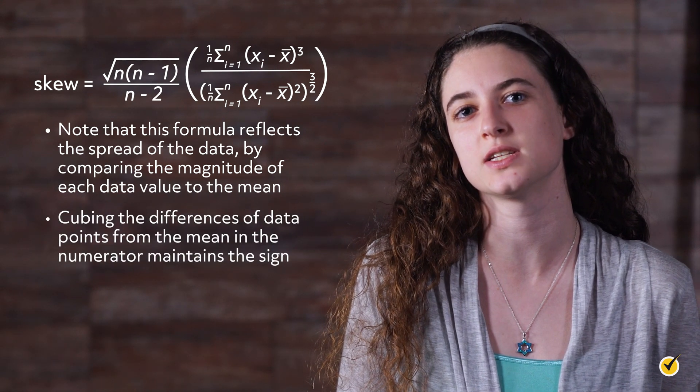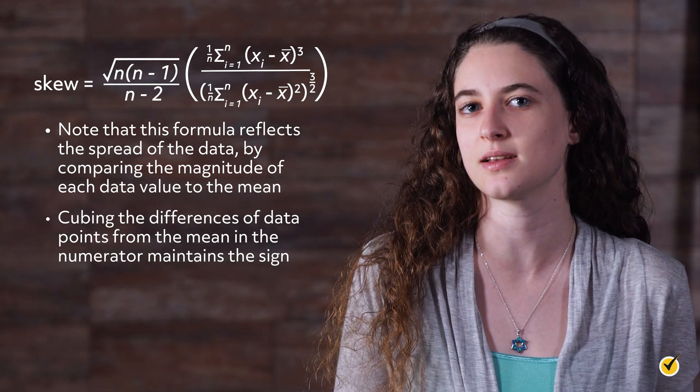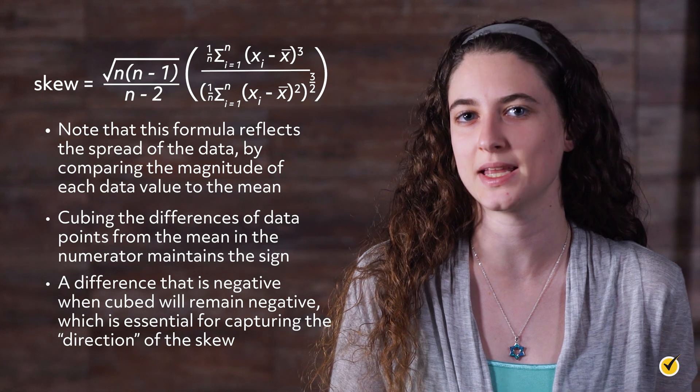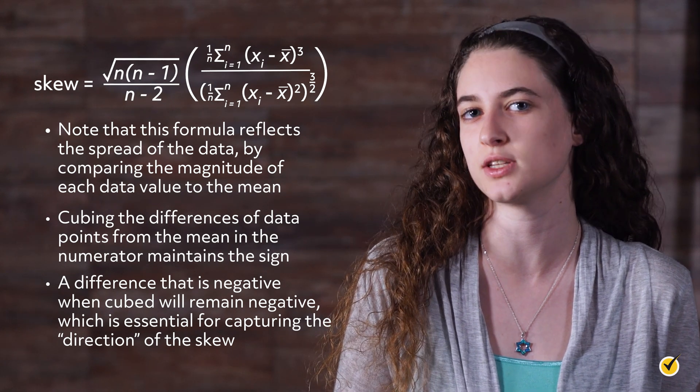Cubing the differences of the data points from the mean in the numerator maintains the sign. For example, a difference that is negative when cubed will remain negative, which is essential for capturing the direction of this skew.